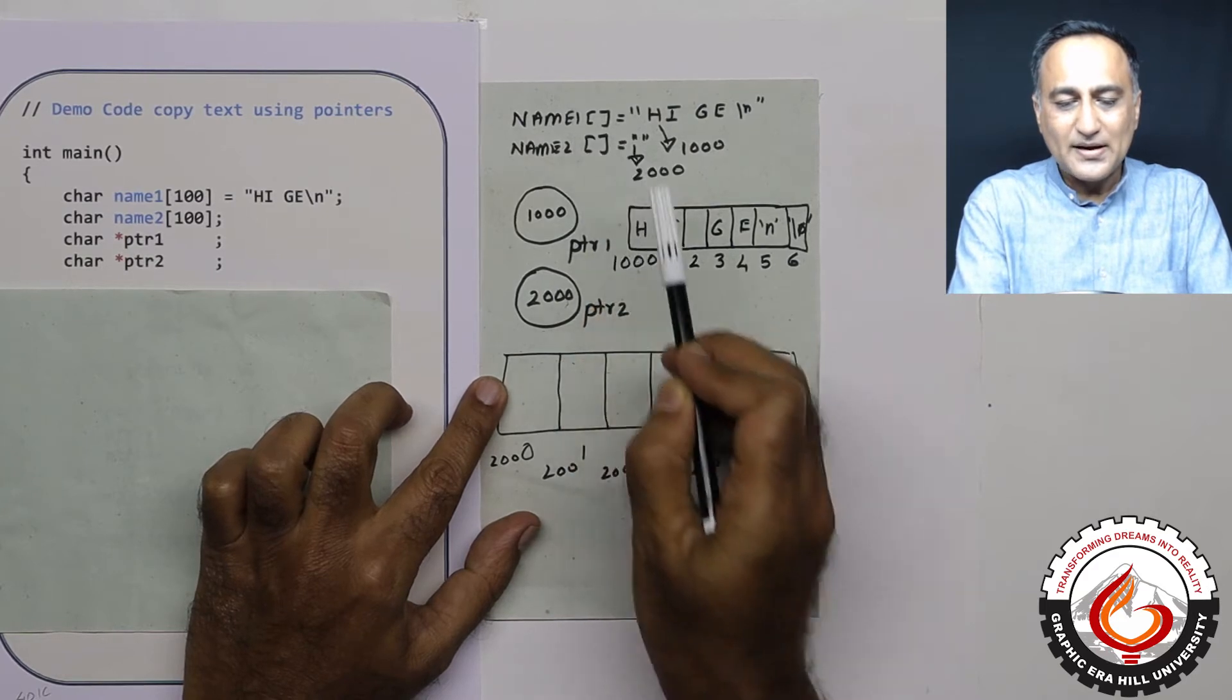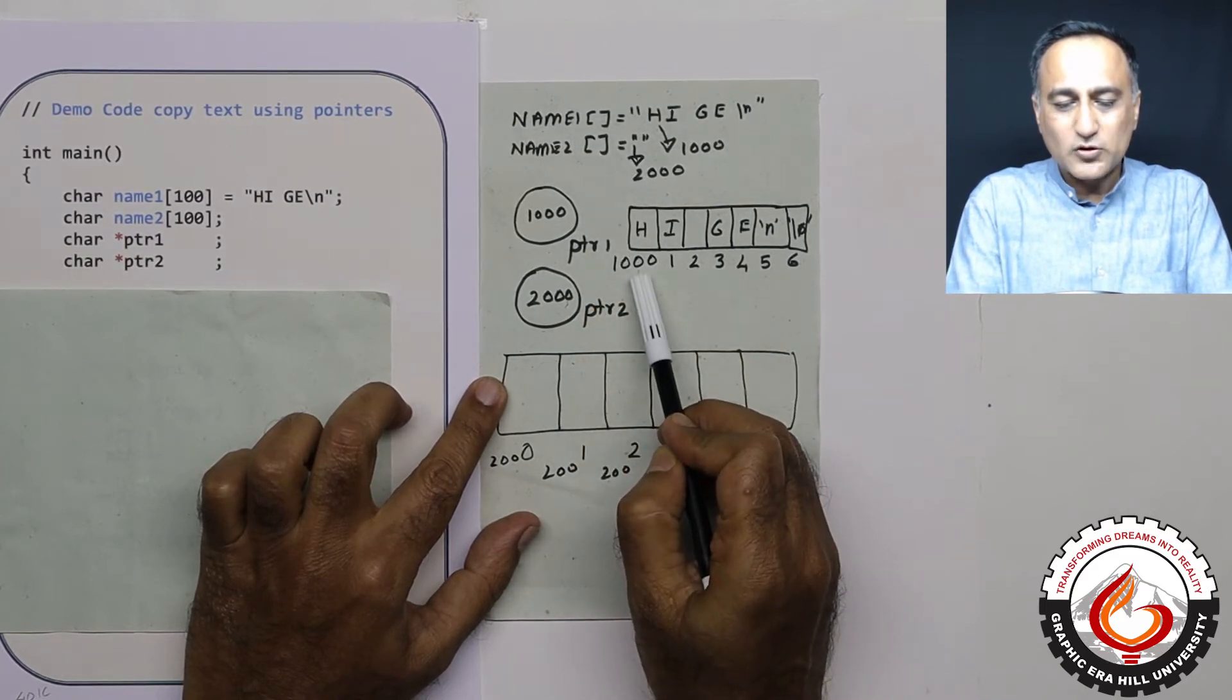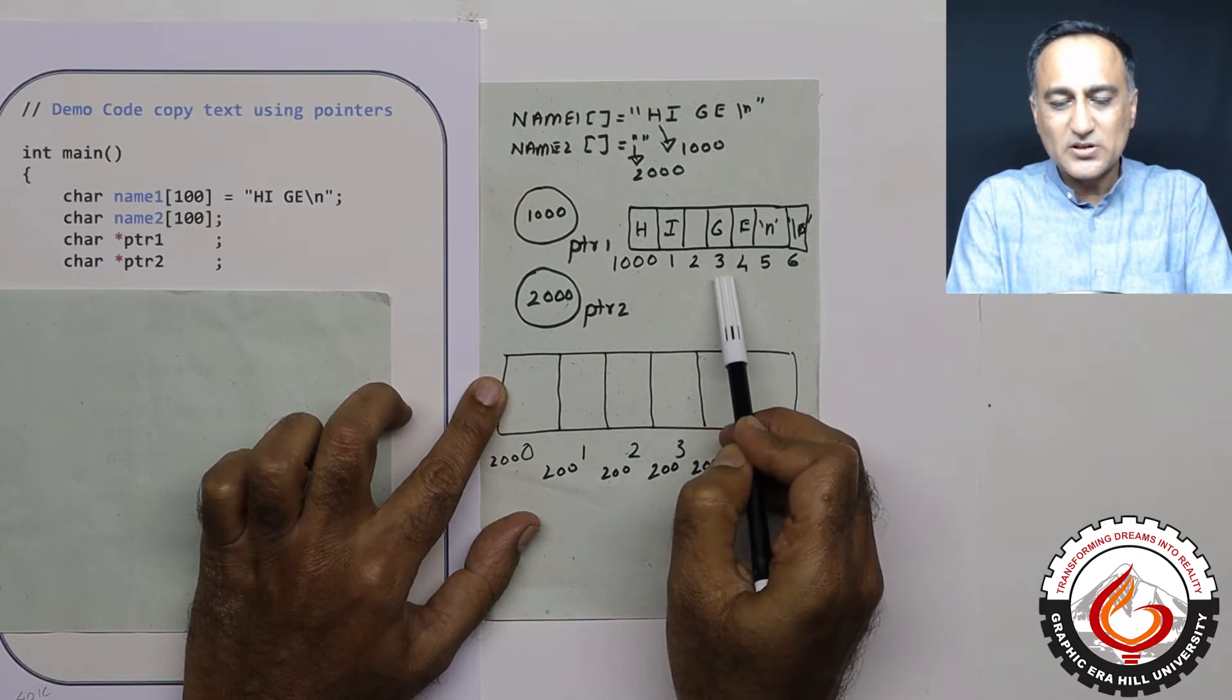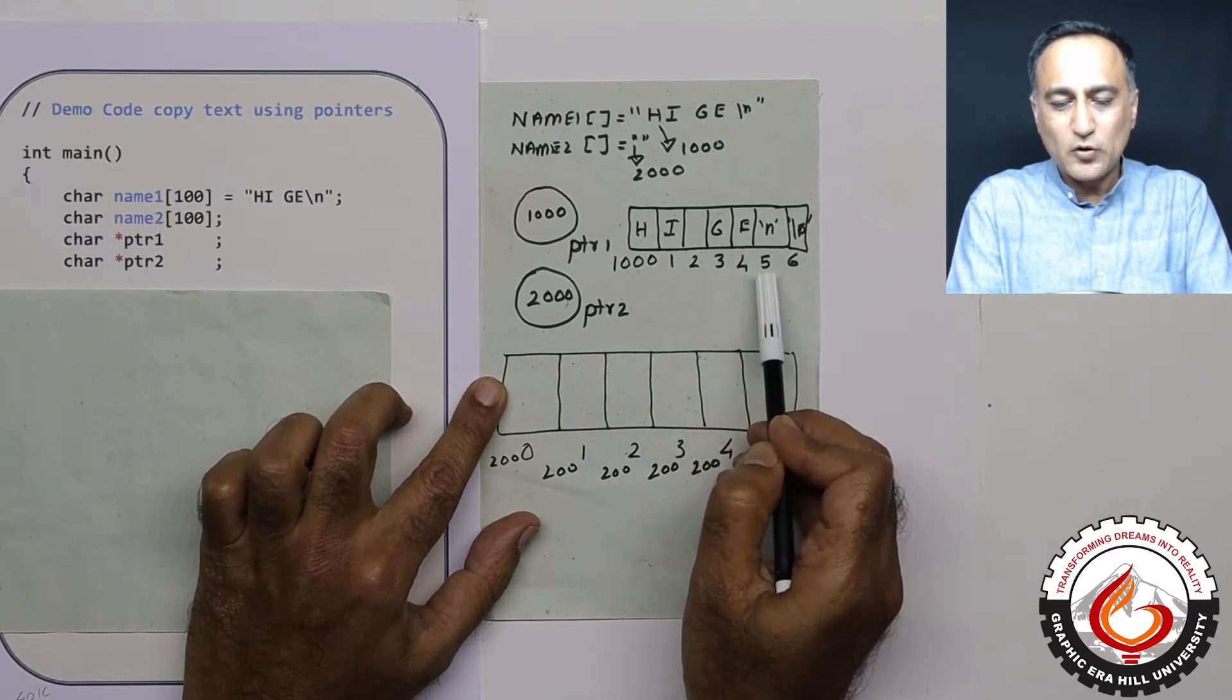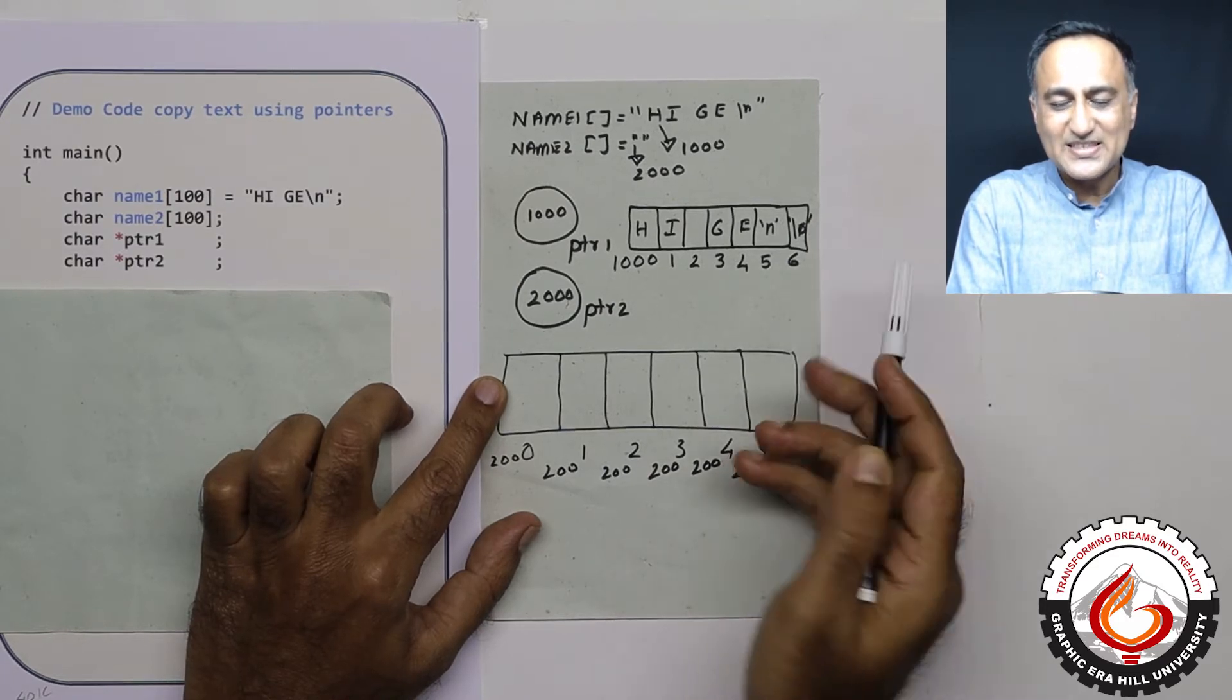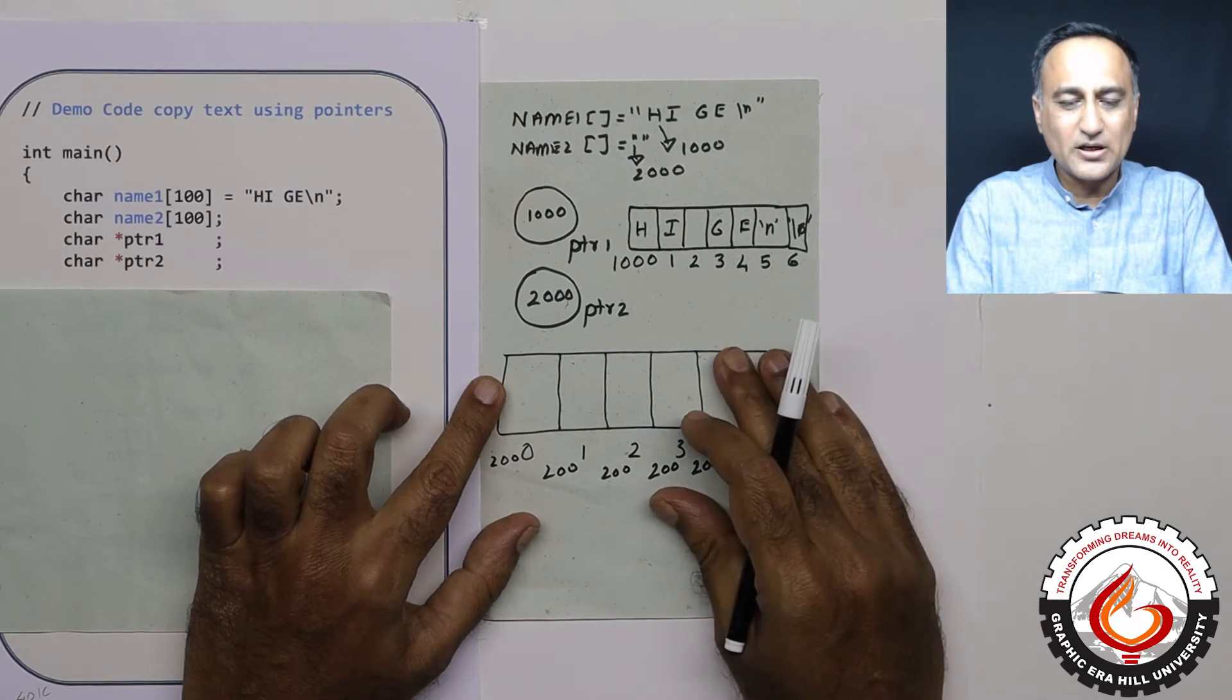Let us say name1 exists at address 1000, i exists at 1001, space at 1002, g at 1003, e at 1004, enter key at 1005, and the null character at 1006. After that, what is there is really not our concern.